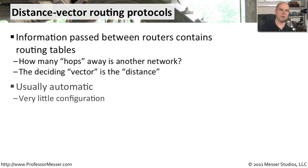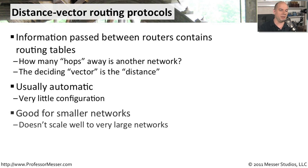This is usually an automatic process — there's very little configuration you have to do. You simply say use that routing protocol and it builds the table itself. Obviously, there are limitations here, because just because something may be a farther number of hops away doesn't mean that it's a less desirable route. It may be a faster route than one with fewer hops, because the bandwidth might be different or the network itself may be having response time problems. If you're using a distance vector routing protocol, it has no way to make that determination — it only looks at the number of hops.